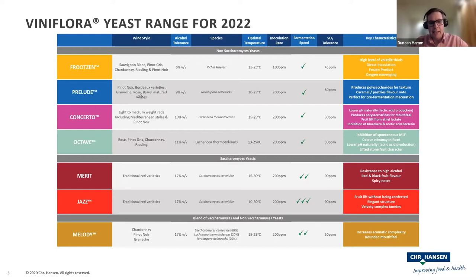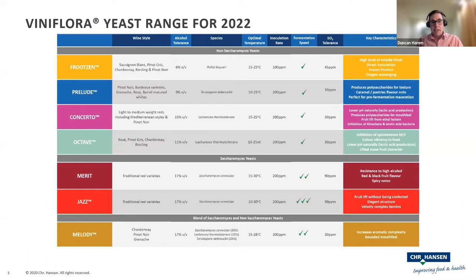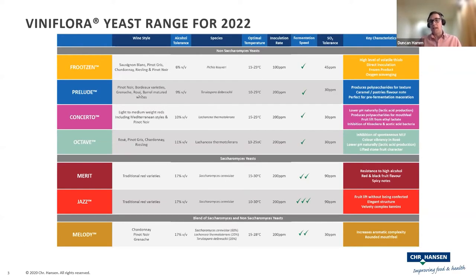Lastly at the bottom, we also have a product called Melody. Melody is a blend of Saccharomyces and Non-Saccharomyces. The best thing I can say about this product is it's a really good entry into Non-Saccharomyces because everything's in one packet and the winemaker literally needs to add yeast only once.